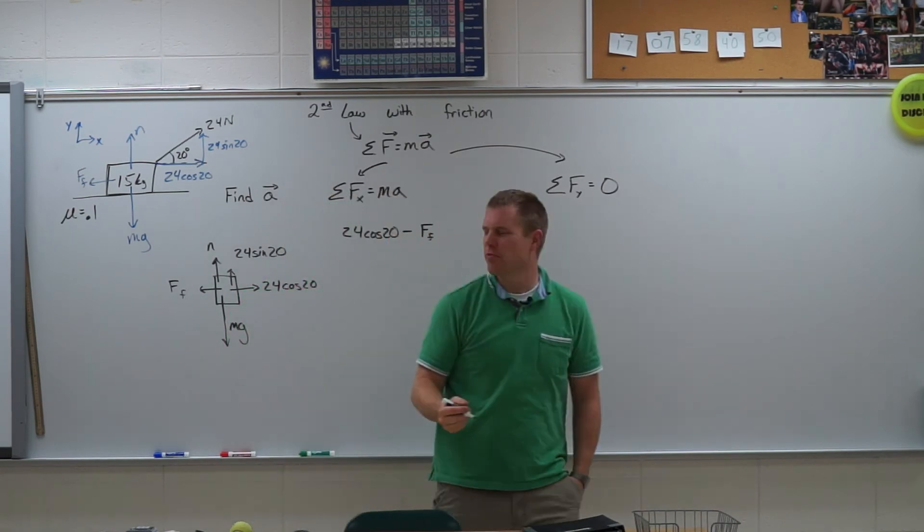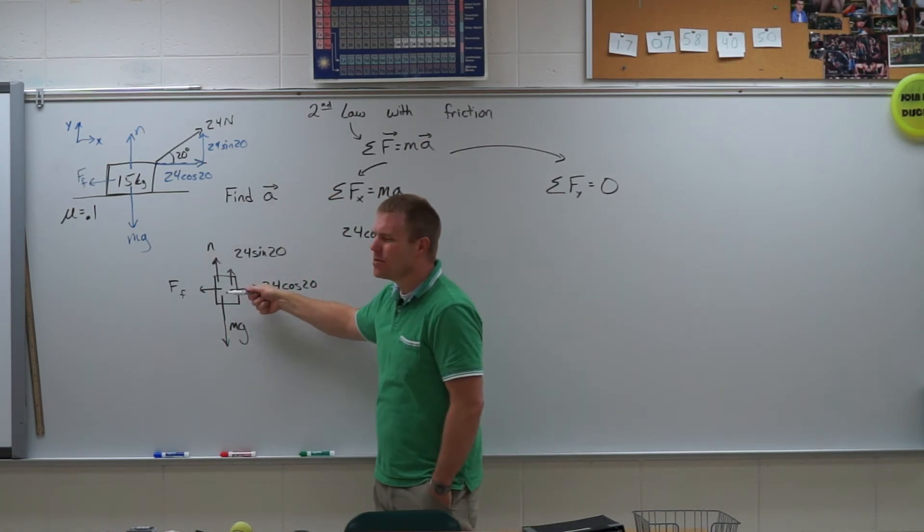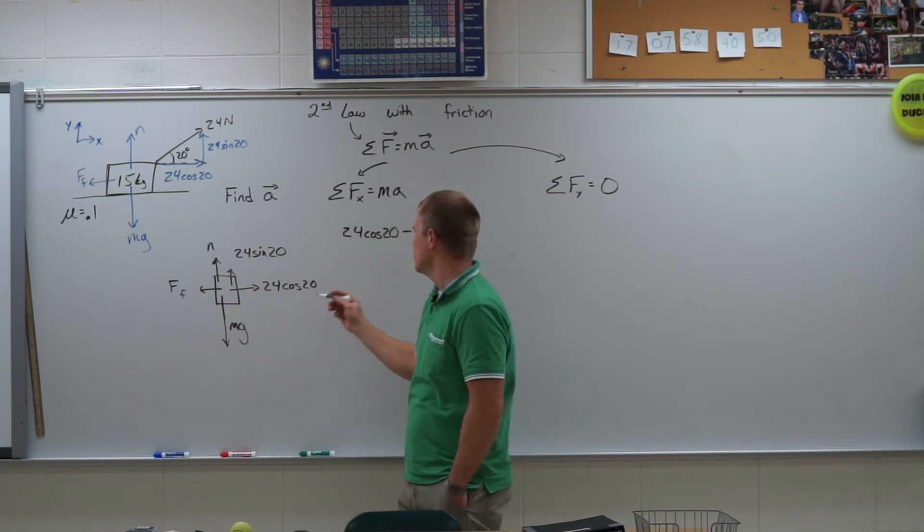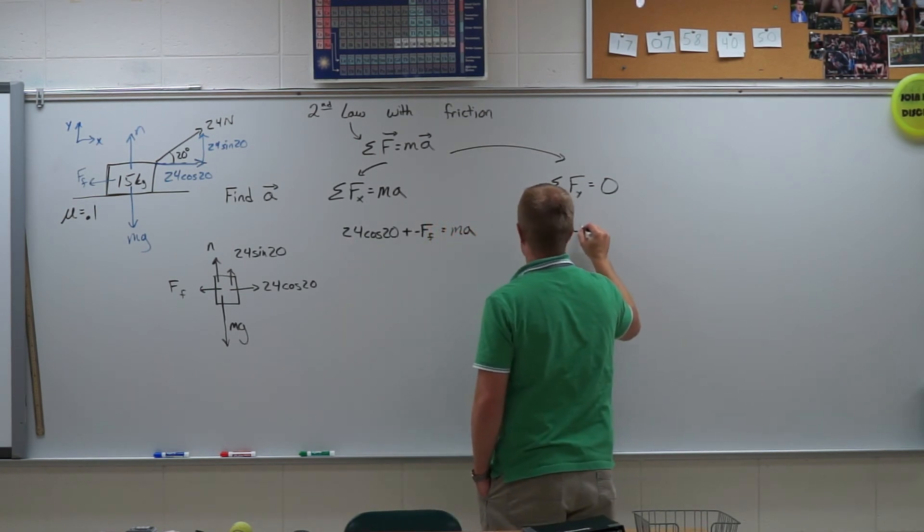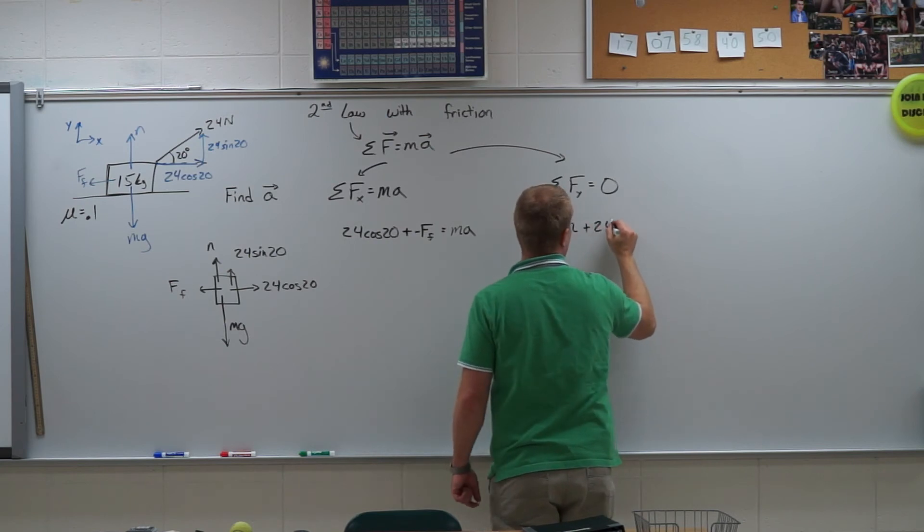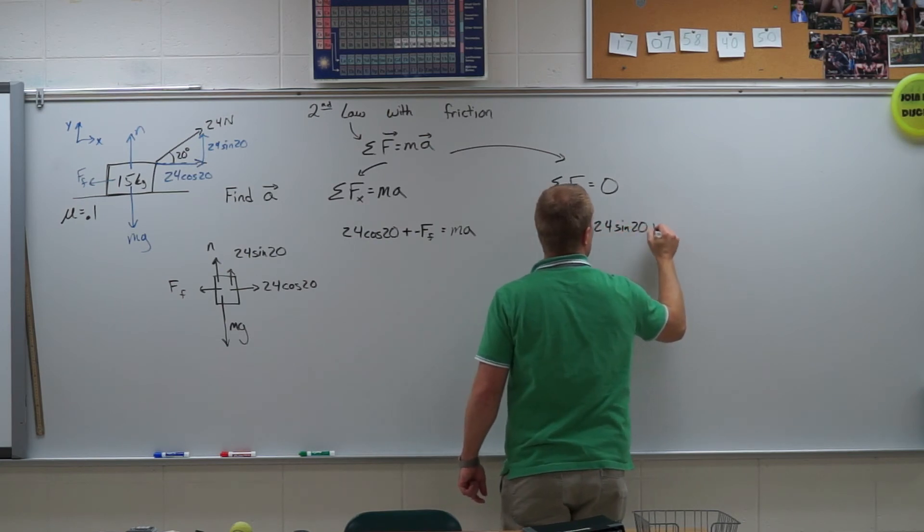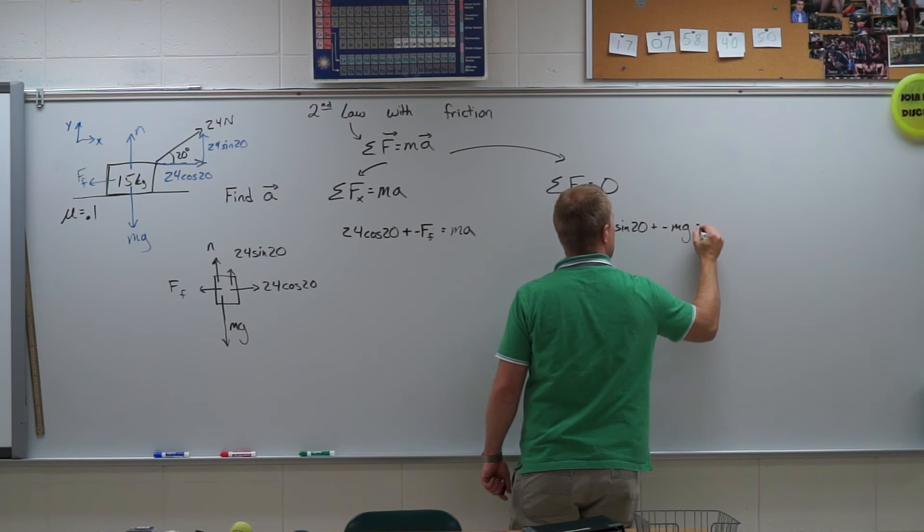Why is it minus? I thought you said add up the forces. Well I'm subtracting it because it's pointing in the negative direction. So another way you can think about it is that plus a negative force of friction equals ma. In the y direction I have normal force plus 24 sine of 20 plus a negative mg equals zero.